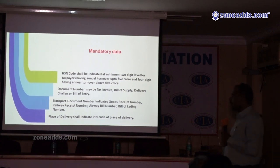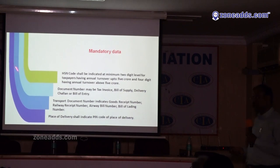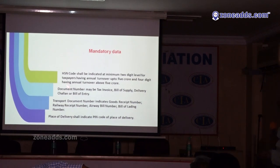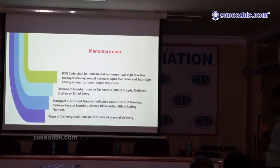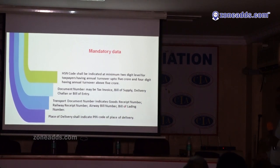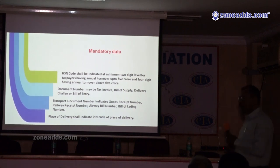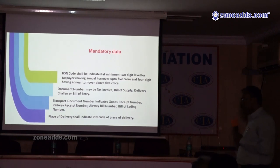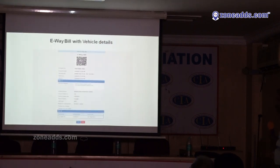The document number is required — either tax invoice number, bill of supply, delivery challan, or bill of entry. In case of imported goods where you don't have an invoice number, you can enter the bill of entry number. For the transport document number, you can enter the goods receipt number, railway receipt number, airway bill number, or bill of lading for ship imports. Place of delivery must be the pin code — because pin code is useful to measure the exact distance.